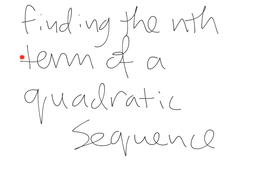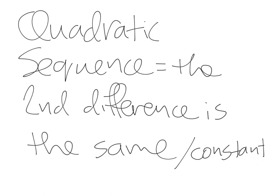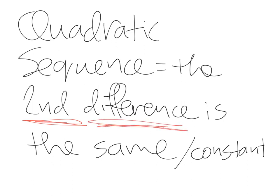Finding the nth term — the nth term is like the general rule or the formula of a quadratic sequence. With a quadratic sequence, the rule is that the second difference is the same or constant. This is very important: the second difference must be the same. Whereas with an arithmetic or linear sequence, the first difference is the same.